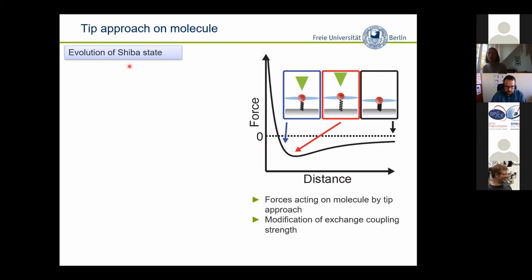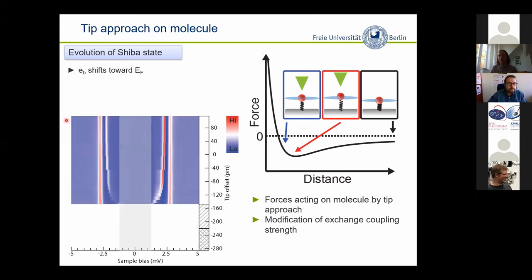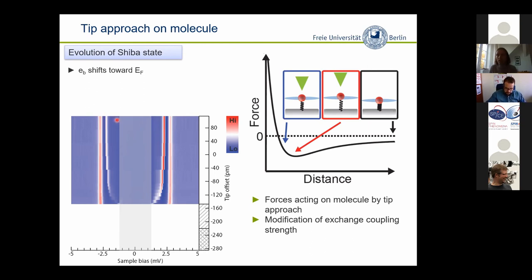We can now look at the evolution of these YSR states at all positions along the potential. Here is a color plot: red means high conductance, blue means low conductance, as a function of sample bias. You see the coherence peaks of the substrate, and inside the Shiba states with different intensity at positive and negative bias voltage. The shaded area is the tip gap. As we approach the tip, we see an evolution — the superconducting energy gap stays the same, but the YSR states change their energy inside the gap. Coming closer and closer, eventually they go to zero energy, cross zero energy, and then curve back.